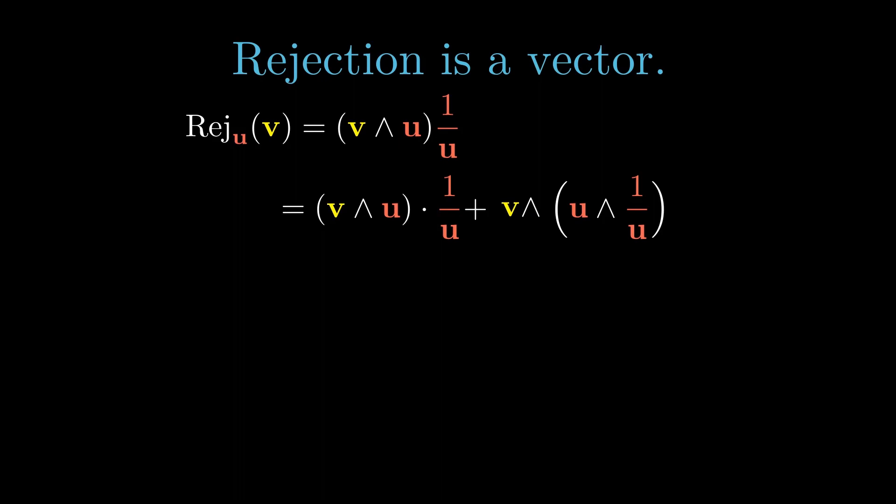But u inverse is proportional to u, so that wedge product is zero. We're left with just the dot product of v wedge u with u inverse. We can expand this using the distributive rule, and we'll find that the rejection of u from v is v minus the projection of v onto u.